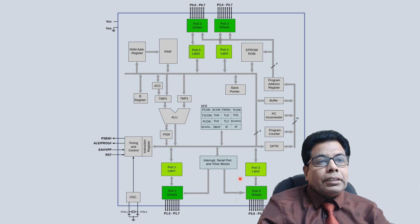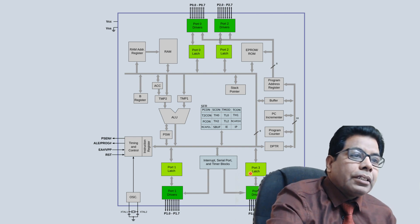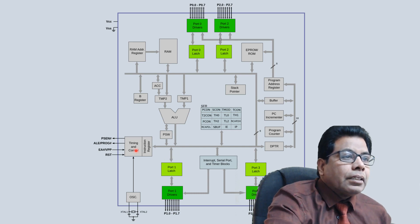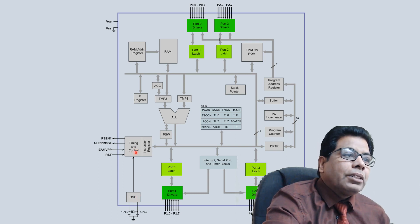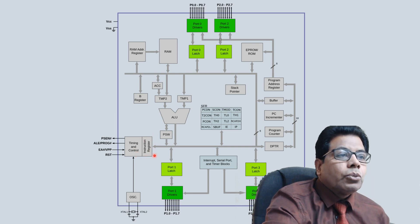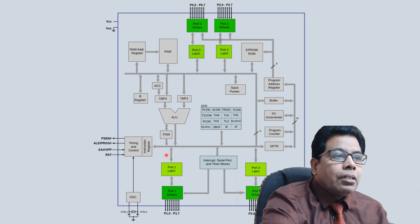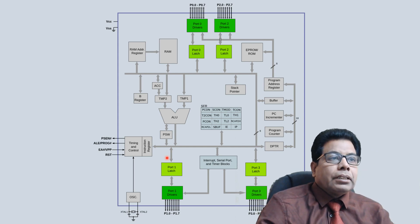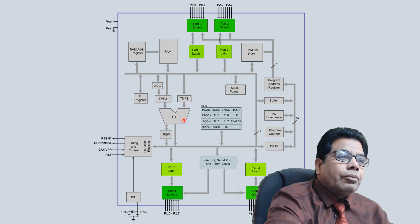This is the detailed functional block diagram. Here you can see the timing and control unit. The oscillator generates the clock and supplies it to the timing and control unit. There is an instruction register for storing instructions. The ALU handles all arithmetic and logical operations.